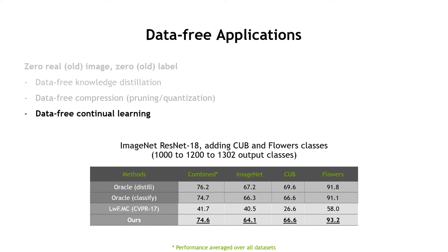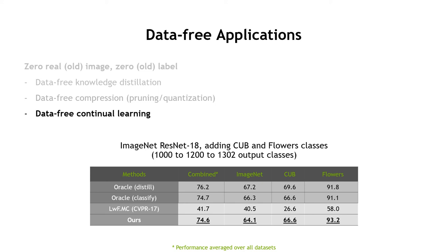The main takeaway of this paper is that a trained deep CNN has surprisingly encoded substantial information of the original training distribution. This distribution can then be sampled very effectively via our proposed method called deep inversion.